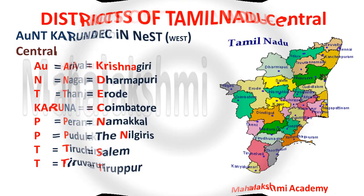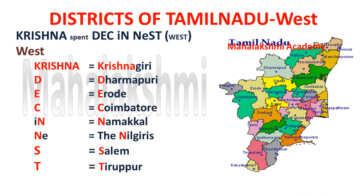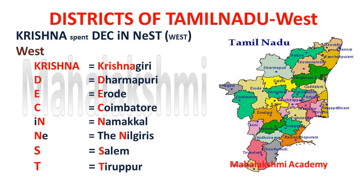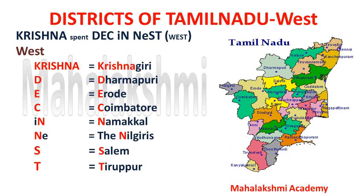Now we move to the west division. The west division districts can be learned through the short code: 'Krishna spent December in nest.' DEC is December, and nest here means home. So Krishna spent December in his home — the nest — and you can remember that this short code is for the west division of districts.